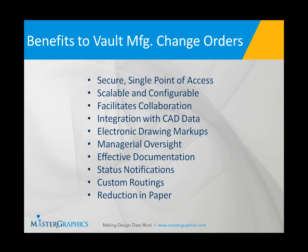There are routings created for this process, so if you have predetermined routings for a particular change order, you can set that up, but you can also customize it further. For example, maybe during a change order process somebody was recently hired — you can customize that routing, add that individual, and now they're part of the process. As mentioned earlier, there's also a reduction in paper. With electronic drawing markups organized in the change order, that reduces those drawing markups and also reduces the amount of paper with the change order itself.